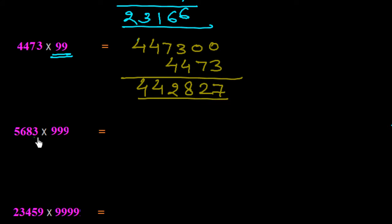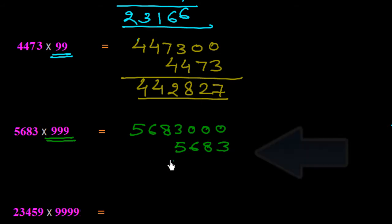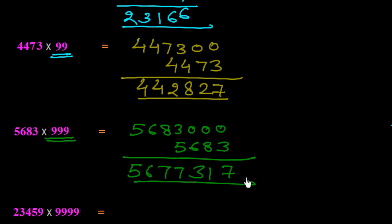Now, 5683 multiplied by 999. There are 3 digits in the series, so we add three zeros: 5683000. We subtract 5683. So: 10 minus 3 is 7, 9 minus 8 is 1, 9 minus 6 is 3, 12 minus 5 is 7 — giving 765, so the answer is 5677317.